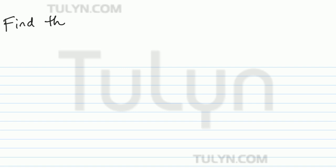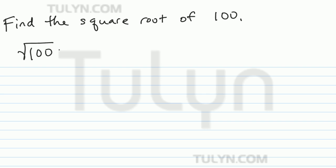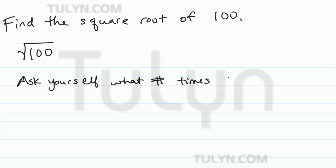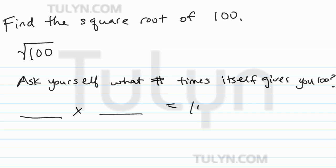Times the square root of 100. Ask yourself, what number times itself gives you 100? Some number times itself — it has to be the same number.